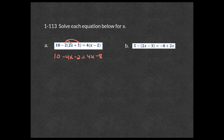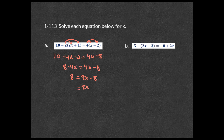Combining like terms: 10 minus 2 gives 8, so we have 8 minus 4x equals 4x minus 8. Add 4x to each side: 8 equals 8x minus 8. Then add 8: 8x equals 16. Divide by 8 and x equals 2. That's part a.